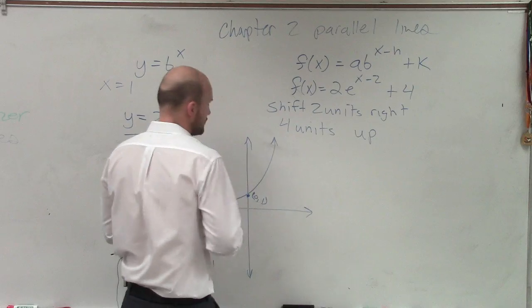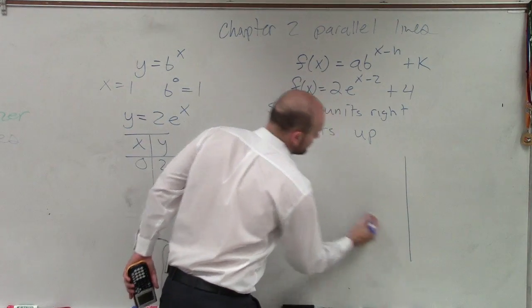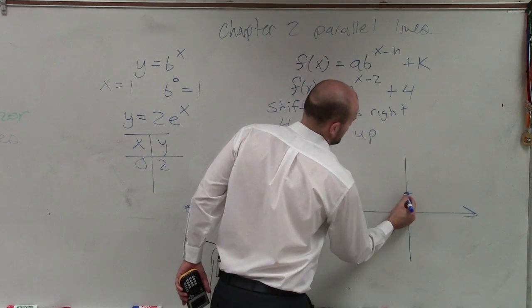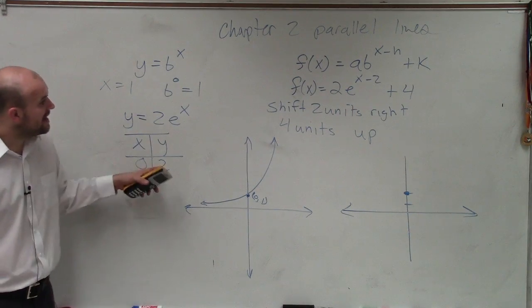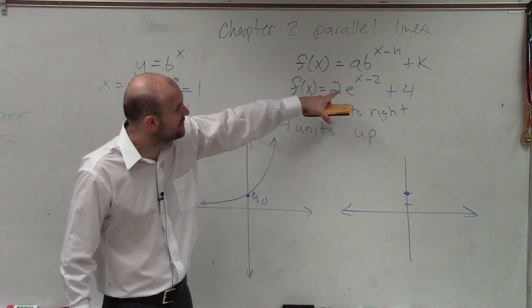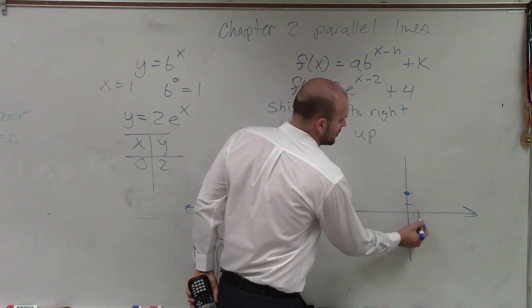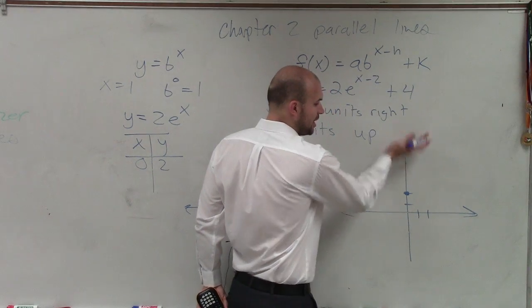So now we say the graph crosses at 0 comma 2. And then from there, the graph shifts to the right 2 and over 4 units. So you could say over 2 and then up 4.